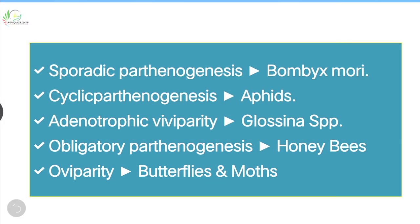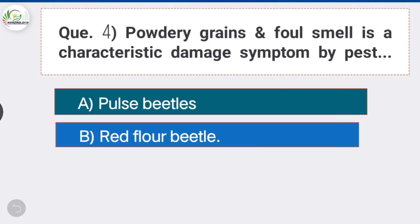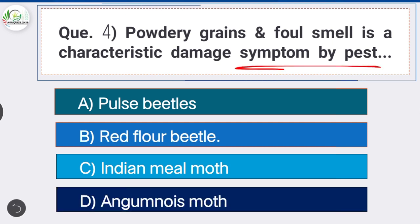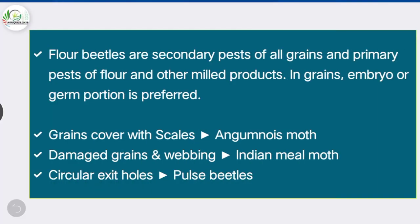Question 4: Powdery grains and foul smell is a characteristic damage symptom of which pest? Option B is the correct answer: red flour beetle. Red flour beetles are secondary pests of all grains and primary pests of flour and other milled products. In grains, the embryo or germ portion is preferred.